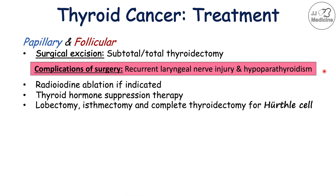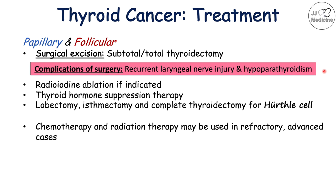For the Hurthle cell carcinoma subtype within the follicular category, a lobectomy, isthmectomy, and complete thyroidectomy may be used. If papillary and follicular thyroid carcinoma cases are refractory or advanced and not responding to treatments, chemotherapy and radiation therapy may be used.